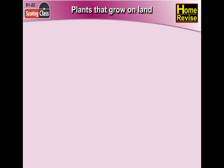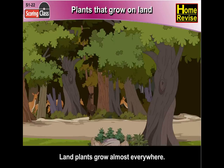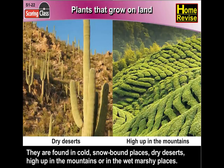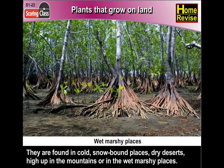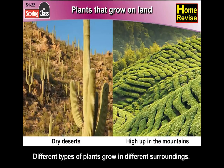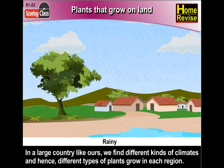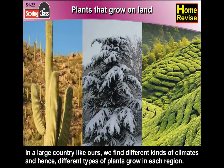Plants that grow on land grow almost everywhere. They are found in cold snow-bound places, dry deserts, high up in the mountains, or in wet marshy places. Different types of plants grow in different surroundings. In a large country like ours, we find different kinds of climates, and hence different types of plants grow in each region.